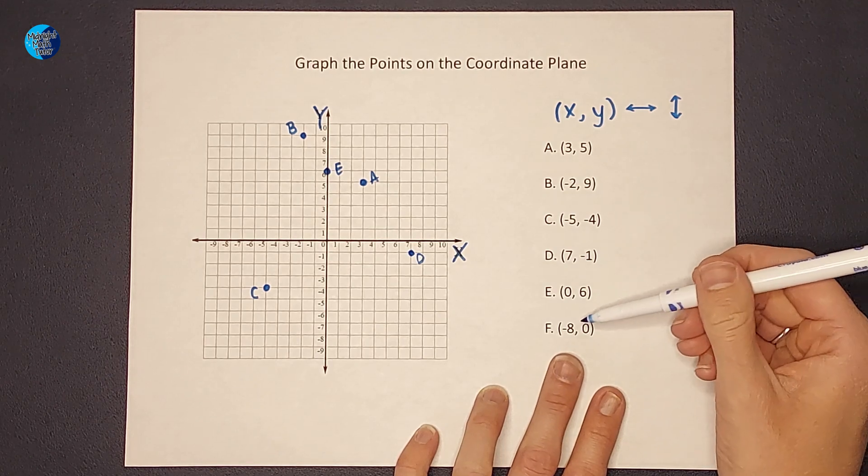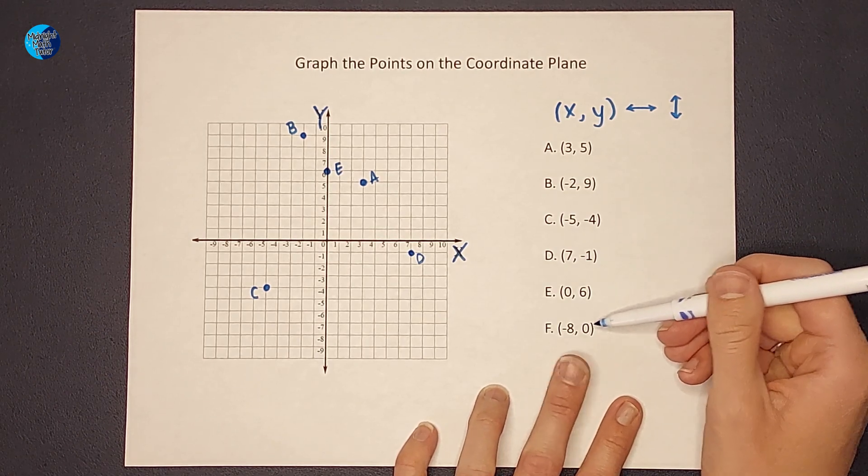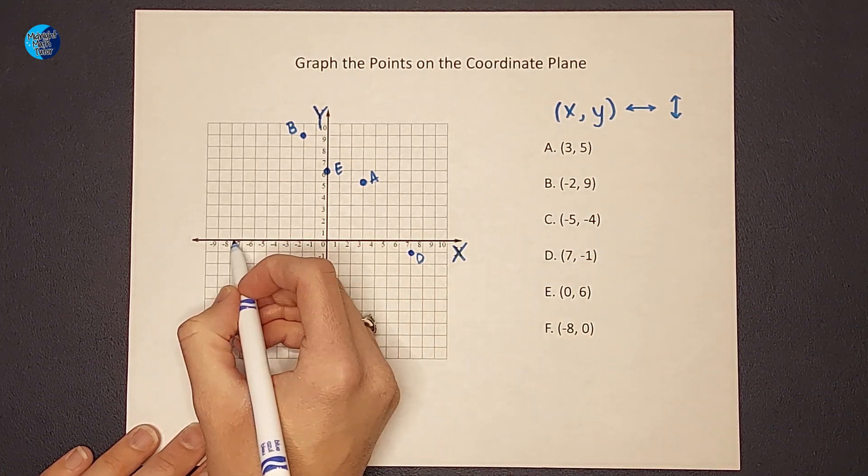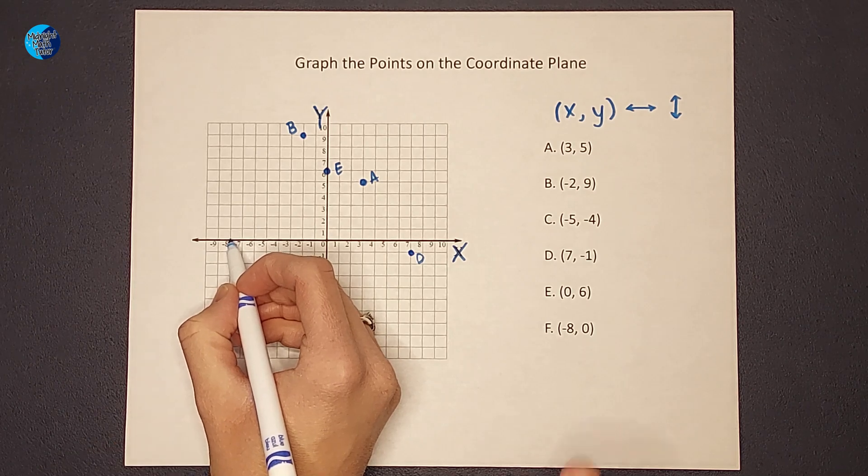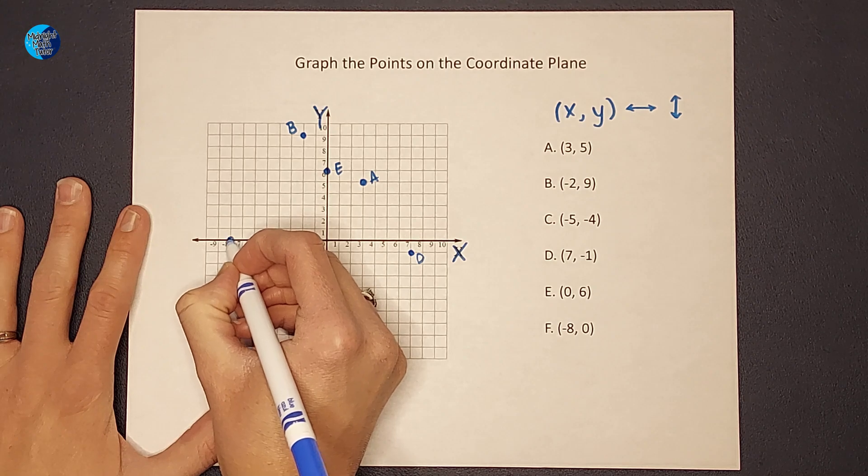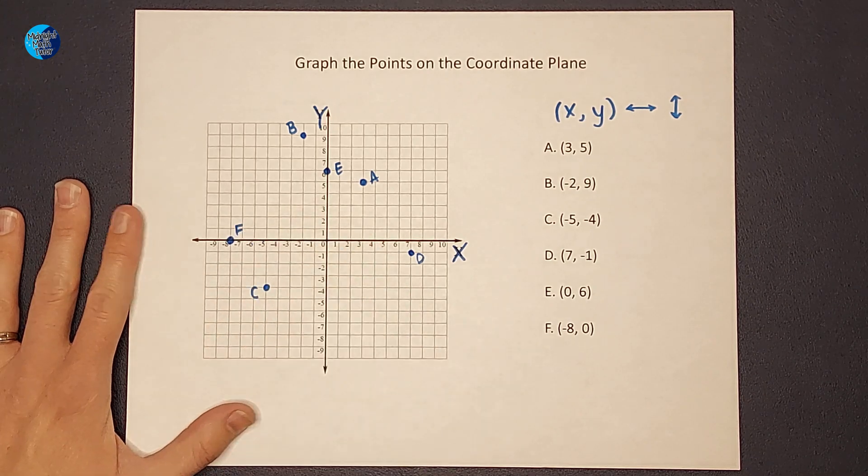Then on this one my x is negative 8 and my y is 0. So as always I start at 0, 0. I'm gonna go to the left 8. And then y is 0. So I'm not gonna go up and down at all. My point is going to be right on the x-axis and that is point F.